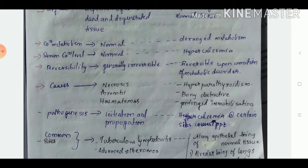About reversibility, dystrophic is generally irreversible, whereas metastatic is reversible upon correction of the metabolic disorder. The causes for dystrophic are necrosis, thrombi, and hematomas.